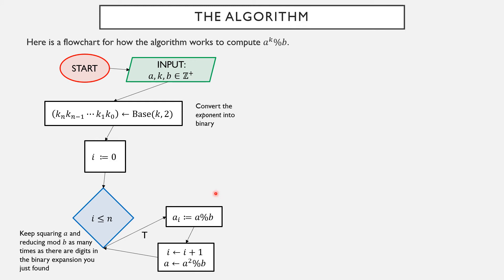I start a counter at 0 and enter a loop. As long as my counter has not passed the largest power of 2 used here, I do this loop: I declare a sub i to be a mod b, increase my counter, square a, and replace that as my value of a. Since my counter is increasing, I'm getting new a sub i's — first a sub 0, then a sub 1, then a sub 2, and so forth. a sub 0 has no squaring; a sub 1 has been squared once; a sub 2 squared twice; a sub 3 squared again, and so forth. I am squaring over and over again.